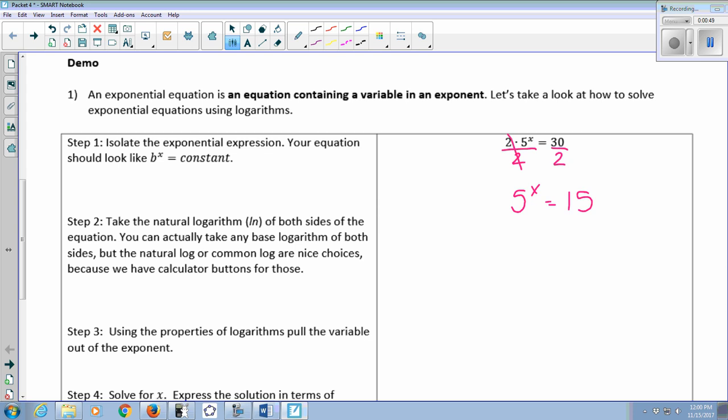Step two is to take the natural logarithm of both sides of the equation. You can actually take any base log, but natural or common are nice choices because we have calculator buttons for those. So I'm going to take the ln of 5 to the x equals the ln of 15.